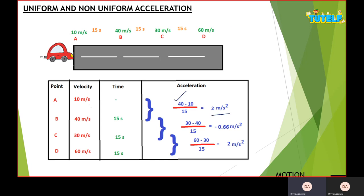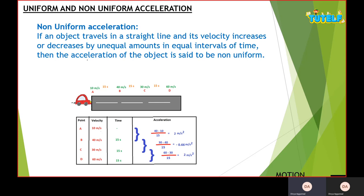Calculating the values: we get 2 m/s² initially, then minus 0.66 m/s², and then 2 m/s² again. The minus sign shows a decrease in acceleration, which is called retardation. The unit of retardation is also m/s² and it is also a vector quantity — the only difference is that it has a negative sign in front of the acceleration. A non-uniform acceleration occurs when an object travels in a straight line and its velocity increases or decreases by unequal amounts — 30 m/s, then minus 10 m/s, then 30 m/s — in equal intervals of time of 15 seconds.